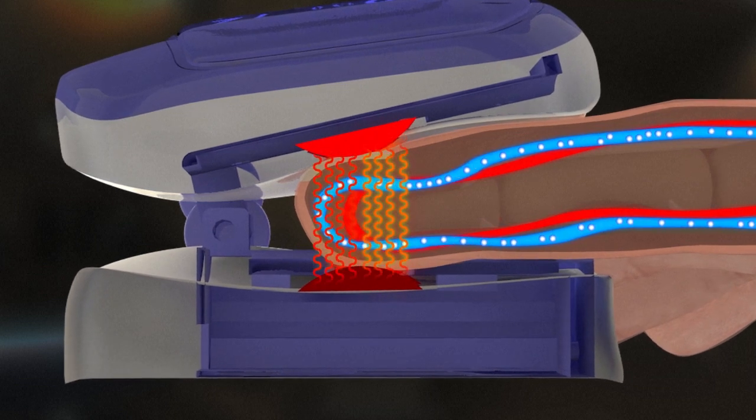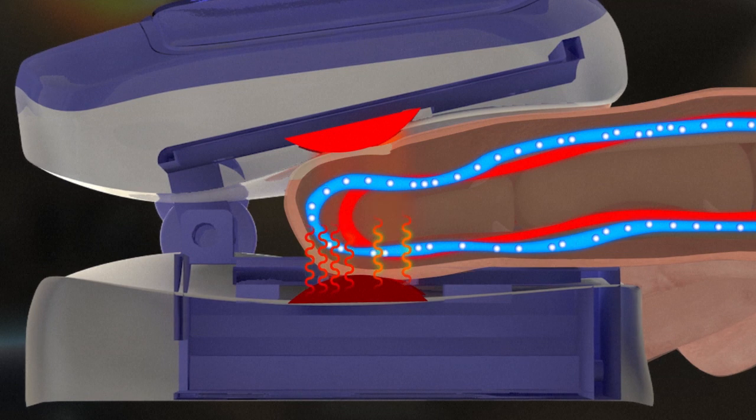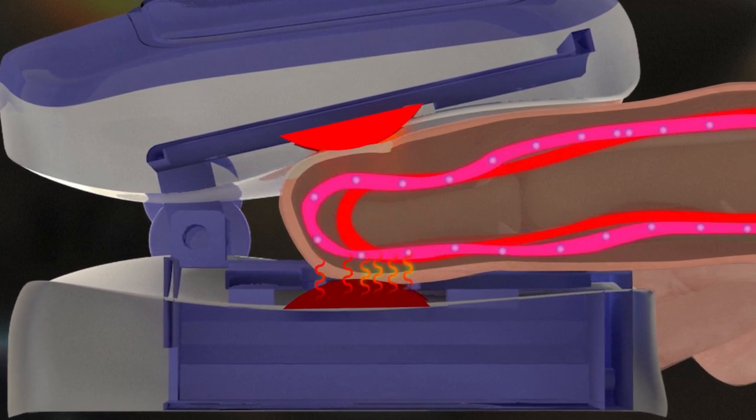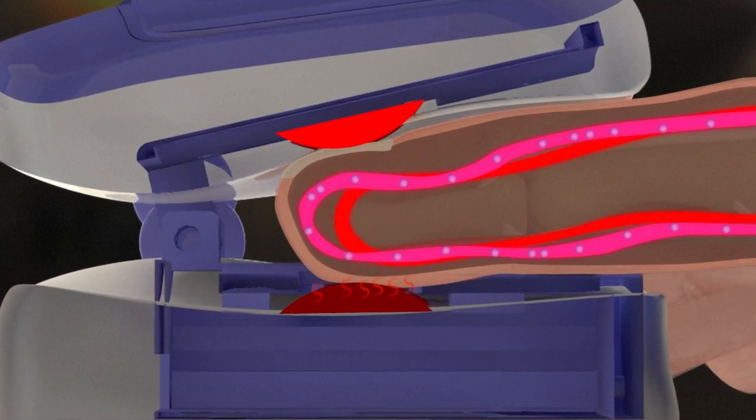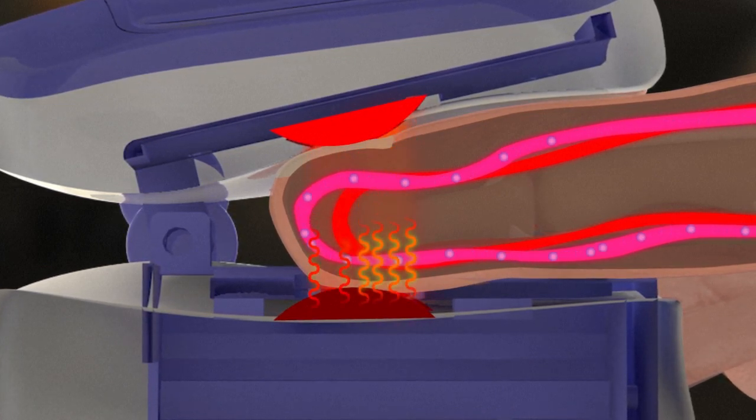Blood containing high levels of oxygen absorbs more infrared light, allowing more red light to pass through it. Conversely, blood without enough oxygen absorbs more red light and lets more infrared light pass through it.